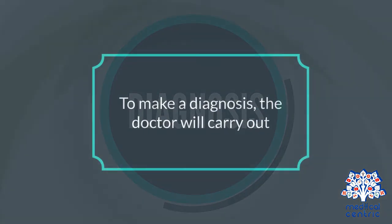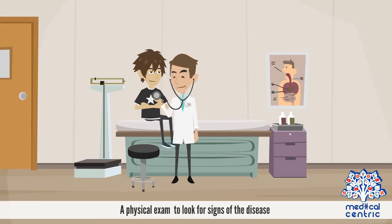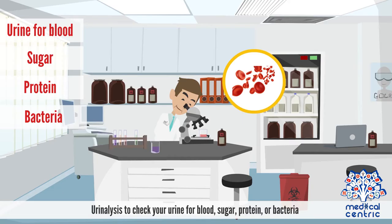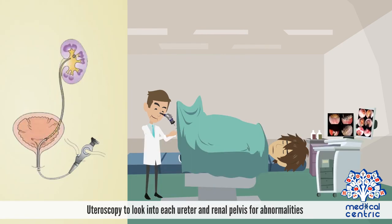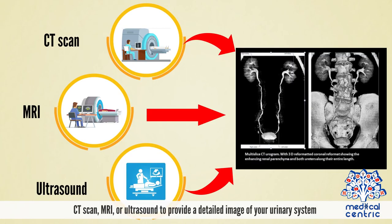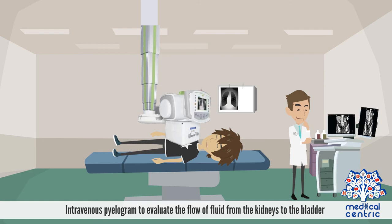To make a diagnosis, the doctor will carry out a detailed review of your health history, a physical exam to look for signs of the disease, and urinalysis to check your urine for blood, sugar, protein, or bacteria. Other procedures include biopsy, ureteroscopy to look into each ureter and renal pelvis for abnormalities, CT scan, MRI, or ultrasound to provide a detailed image of your urinary system, and an intravenous pyelogram to evaluate the flow of fluid from the kidneys to the bladder.